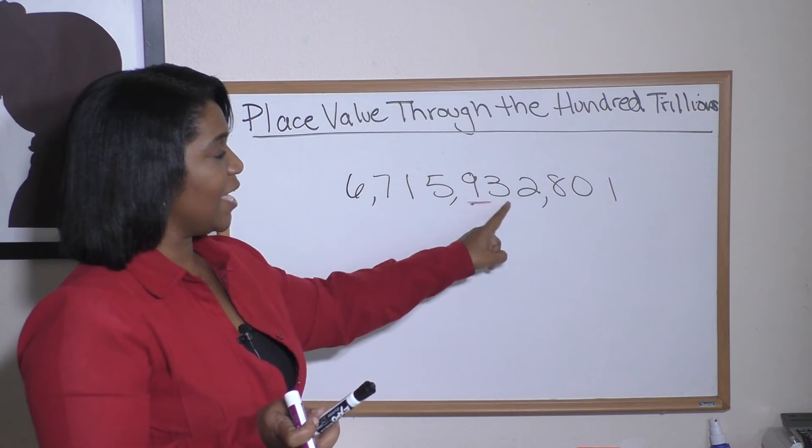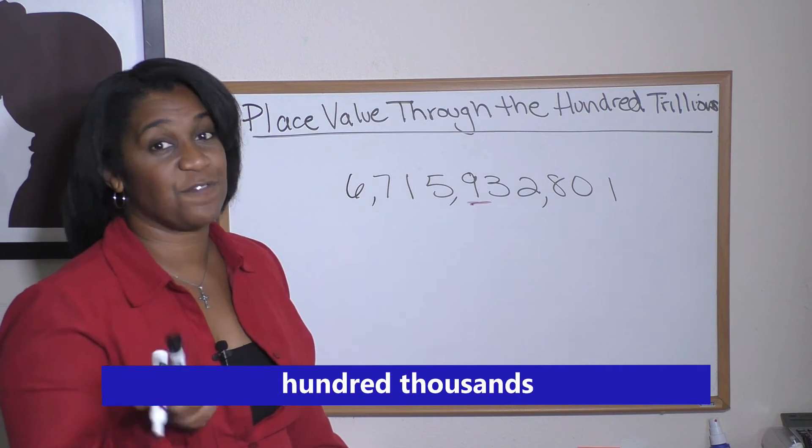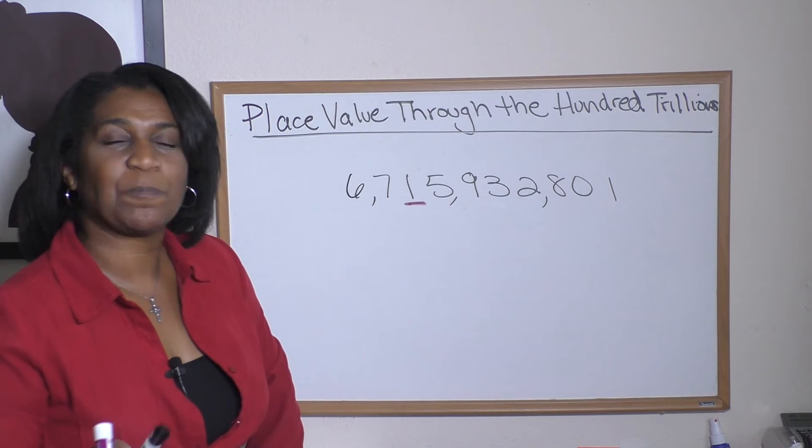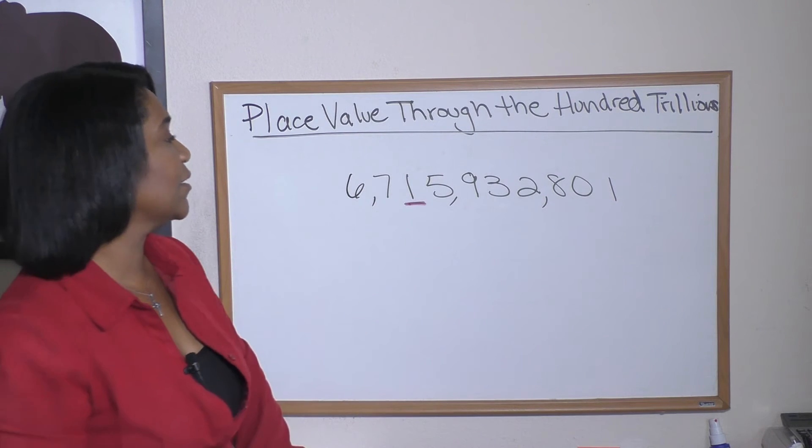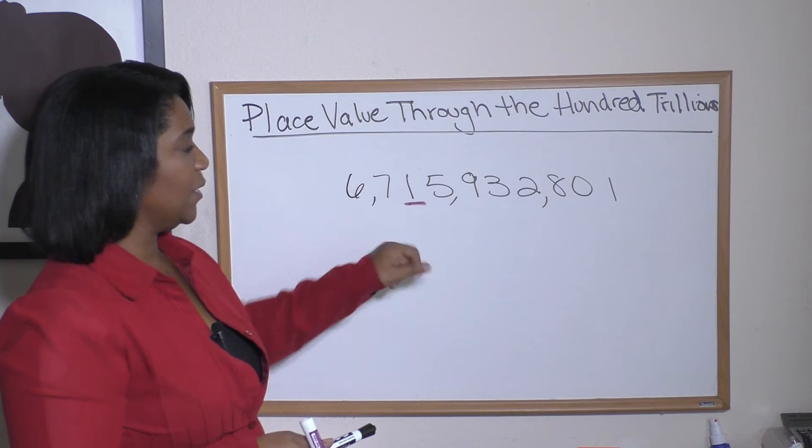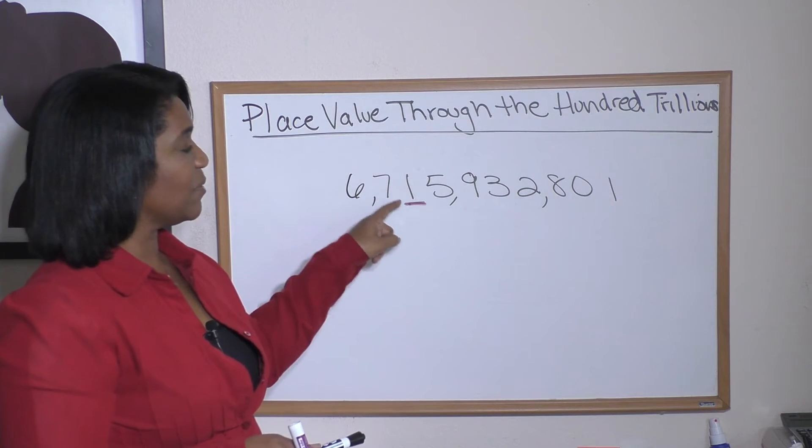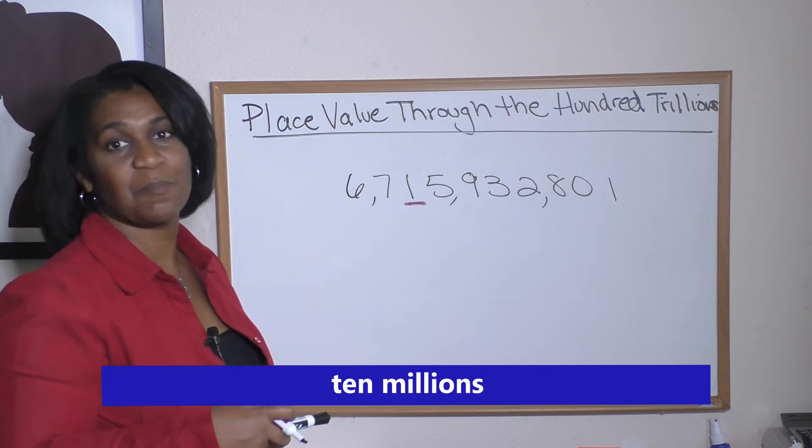What about the one? What place is the one in? Let's take a look. Thousand, million. So we know it's in here, and this is going to be the ten millions place.